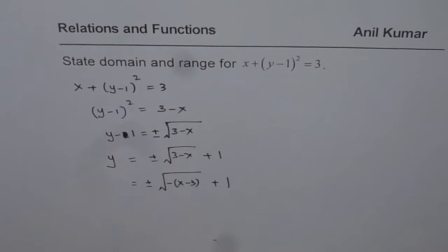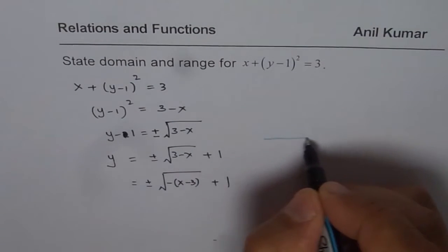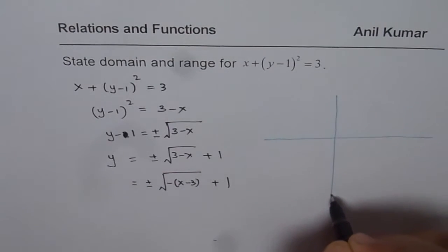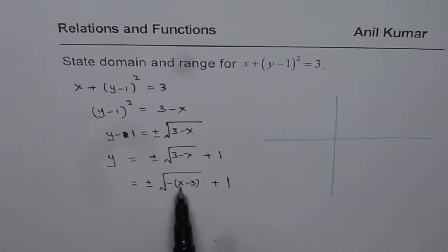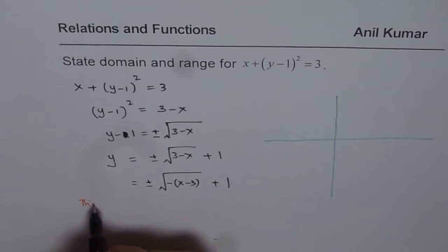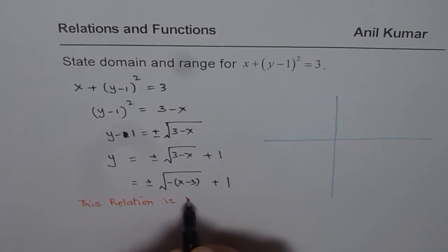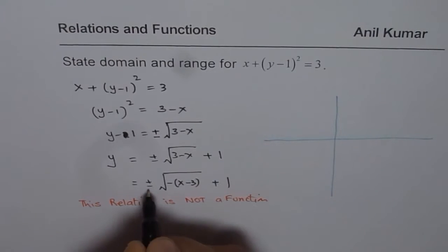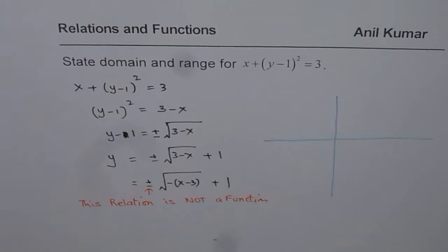The reason for this is that you can understand the transformations and really helps you to sketch the graph. This is a relation which is not a function since for different values of x you could get plus and minus means two values of y. This relation is not a function. Reason is we have two values, plus and minus.